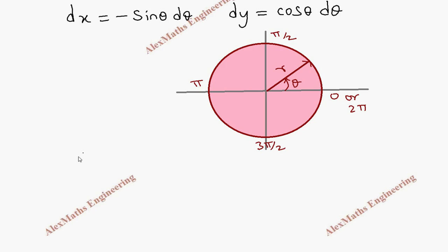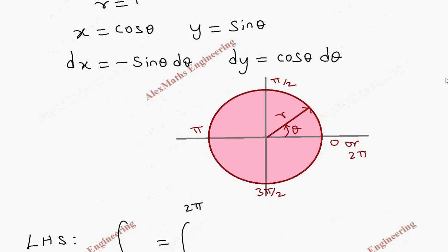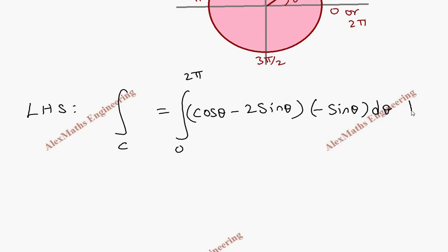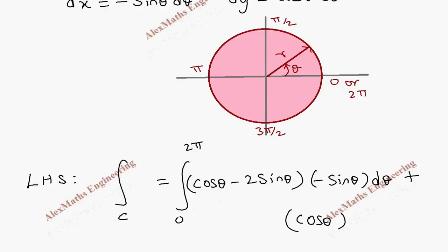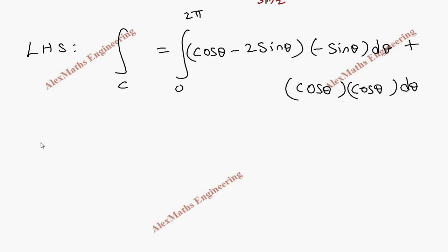Taking the left-hand side of Green's theorem, we have the integral over C from 0 to 2π. We substitute u dx as (cosθ minus 2 sinθ) times (minus sinθ dθ), and v dy as cosθ times cosθ dθ, giving us cos²θ dθ.